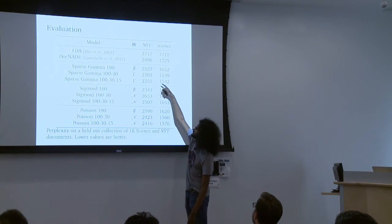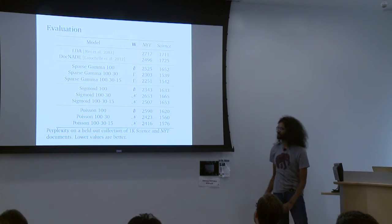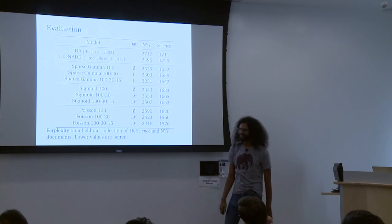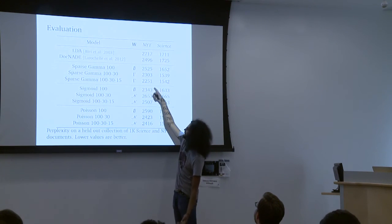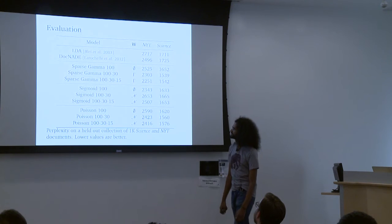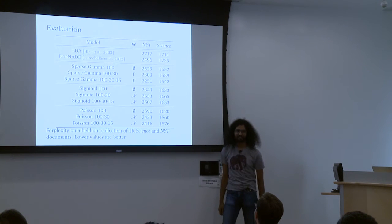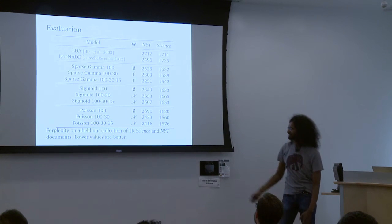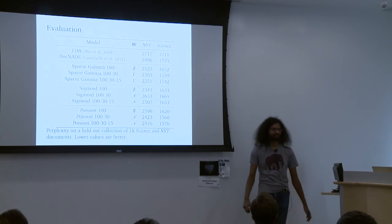A couple of main takeaways: adding more layers can help, but the gain is decreasing. Second, inference in these models, especially the multi-layer versions, is actually hard — if we could do inference better, the numbers might improve. The model I present is the one to use. For the 1-30-15 architecture, the lowest layer is 100, the next is 30, and the top is 15. Going deeper means adding layers; different groups in the table correspond to changing the distribution family.